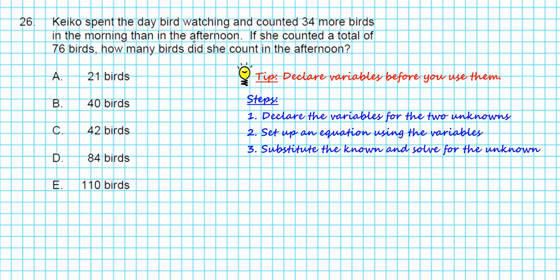It says, Kiko spent the day bird watching and counted 34 more birds in the morning than in the afternoon. If she counted a total of 76 birds, how many birds did she count in the afternoon?